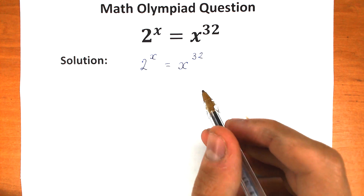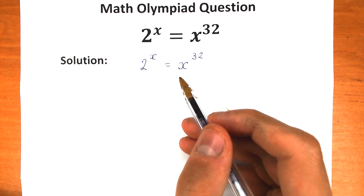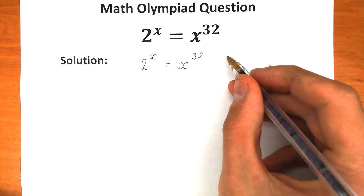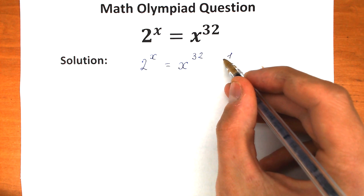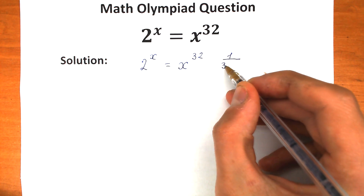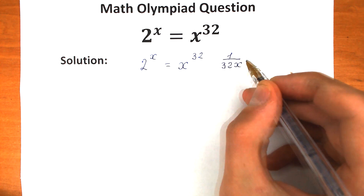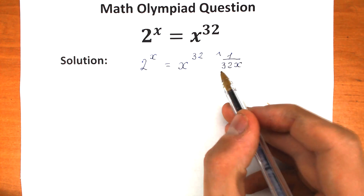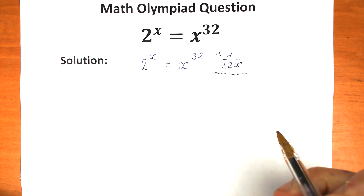First, let's rewrite this challenge: 2 to the power x equal to x to the power 32. Now let's raise both sides to the power 1 over 32x. Don't ask me why, but let's do this — it's a really great trick.